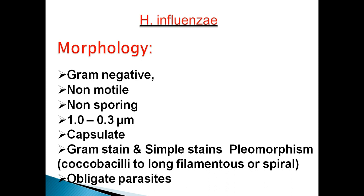Morphology of Haemophilus influenzae: they are Gram-negative, non-motile, non-spore-forming. Their diameter is 1.0–0.3 micrometers. They are capsulated in nature — they have a capsule in the body. They can be seen with the help of Gram stain or simple stain.